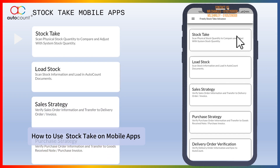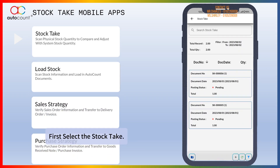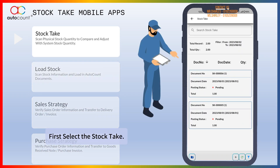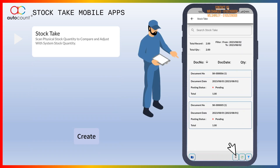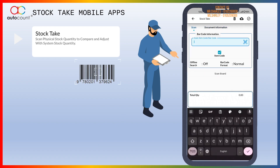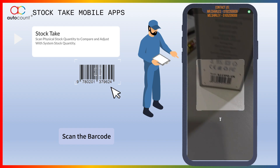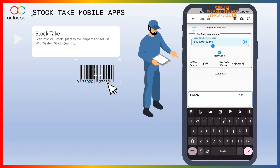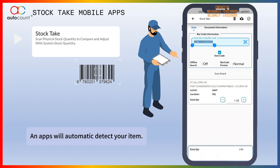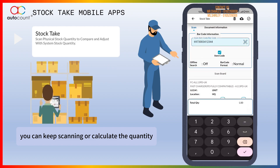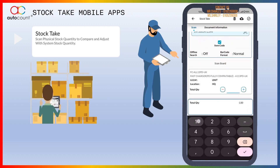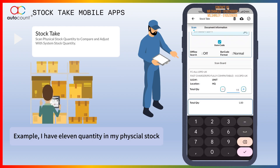How to use Stock Tick on mobile apps. First, select the Stock Tick Create, then press the barcode scanner. Scan the barcode and the app will automatically detect your item. You can keep scanning or calculate the quantity.